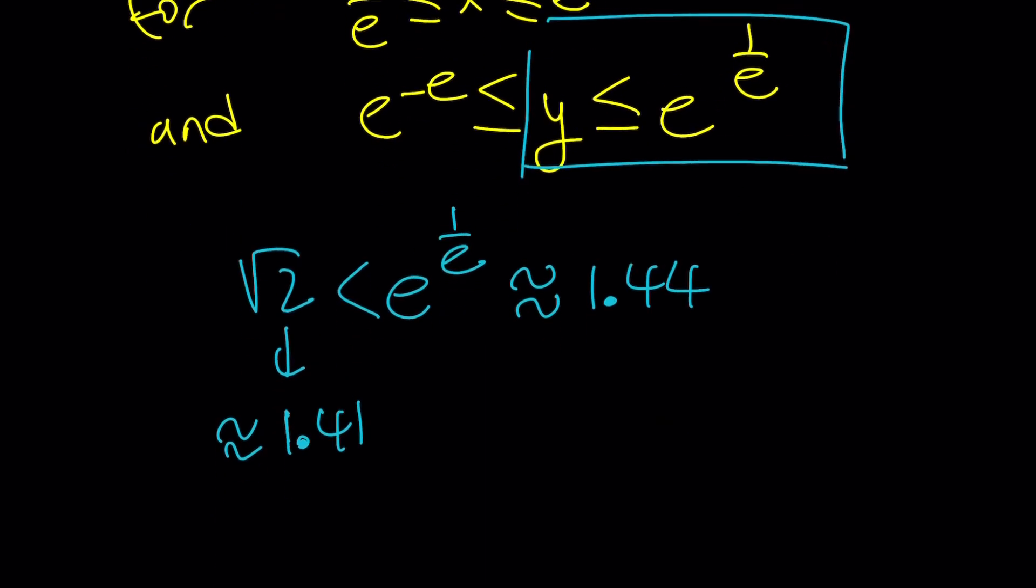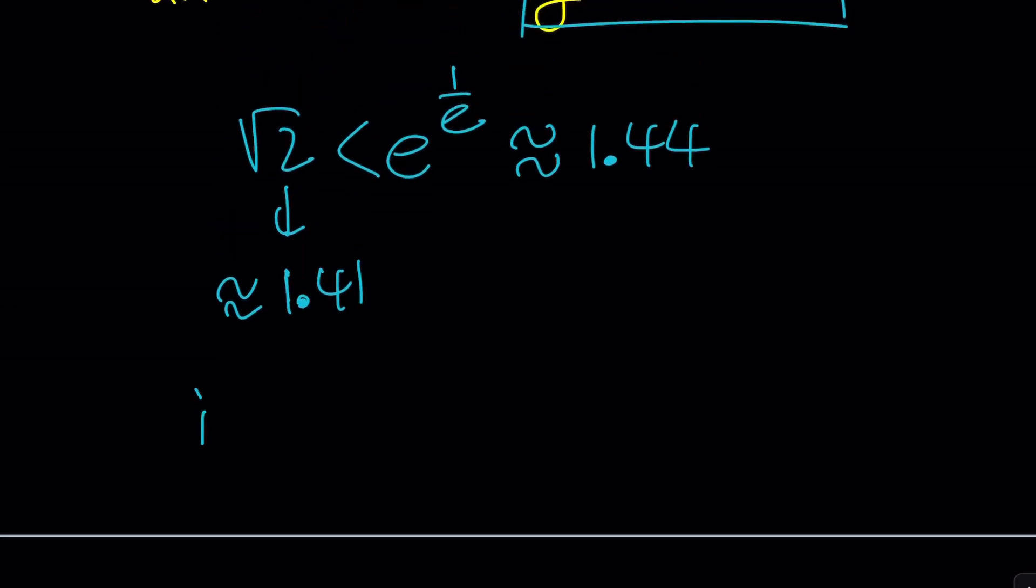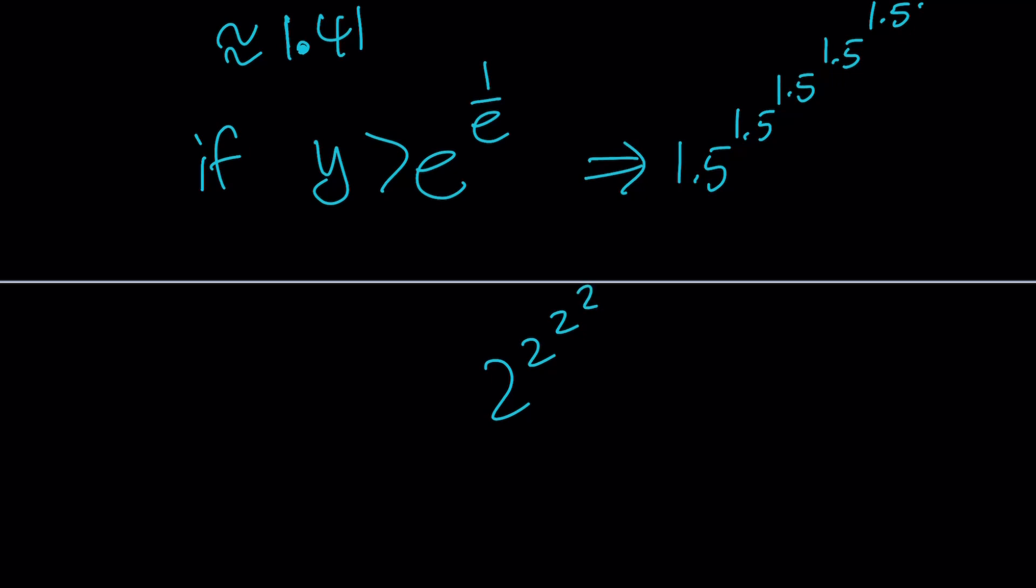Now what happens if y is greater than e to the power 1 over e? Well, it looks like I forgot to include that, but if you get y greater than e to the power 1 over e, then your values are going to diverge. You can go out and test a value, something that is greater than 1.44, maybe something like 1.5. You can try to stack them like this, 1.5 to the power 1.5 to the power 1.5. Try a couple of these, or even use a 2 if you want, and you're going to realize that you hit a really large value super duper quick.